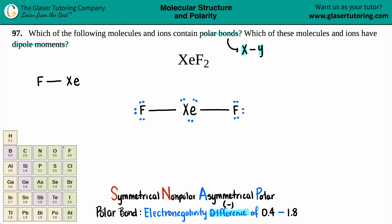On my electronegativity chart, I see that fluorine has an electronegativity of 4.0. So let's just write it under fluorine 4.0.